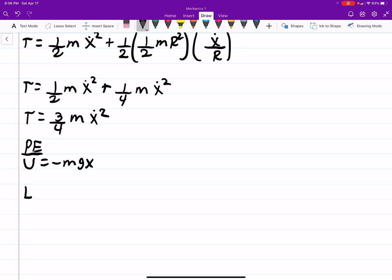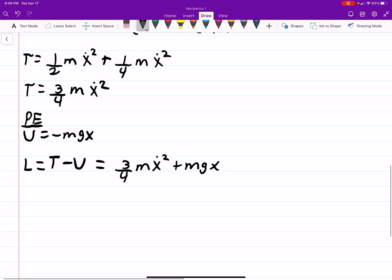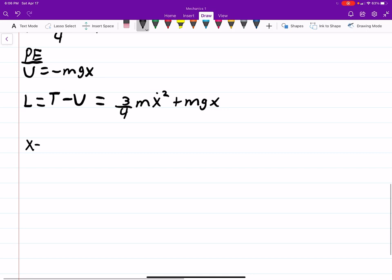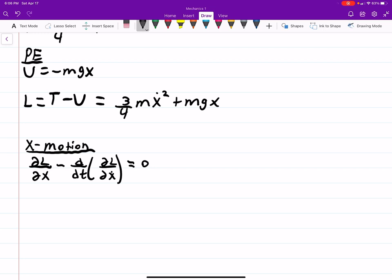And then lastly, well not lastly, but close, we can do the Lagrangian, which is T minus U. Now with the Lagrangian, we can use the Euler-Lagrange to describe the motion. In this case, we'll start with the x motion. So the Lagrangian in the x direction is dL/dx minus d/dt of dL/dx dot. And there's actually no other coordinates we're even interested in, so perfect.